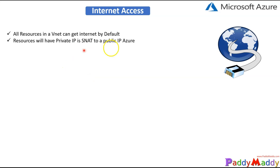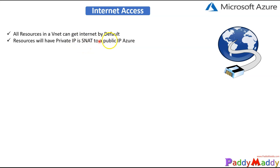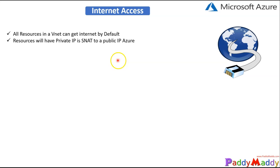So when we create the VNet, within that VNet, the resources will have a private IP that becomes the SNAT source with the help of the public IP. So they go out with some public IP and they get access. That's how it's going to work.